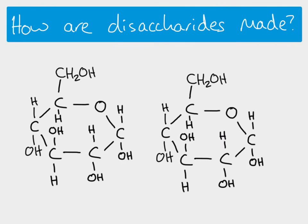The convention with monosaccharides is that we number the carbon atoms, which helps us describe which kinds of bonds have formed. The first carbon in the ring — the first one to the right of the oxygen — is carbon one, then two, three, four, five, six. We do that on both sides. Since this is a condensation reaction, water is going to be removed.